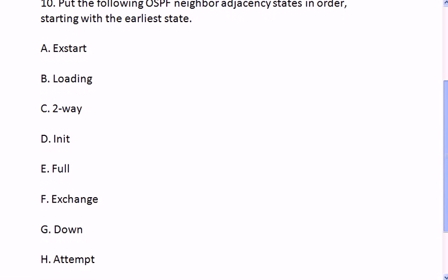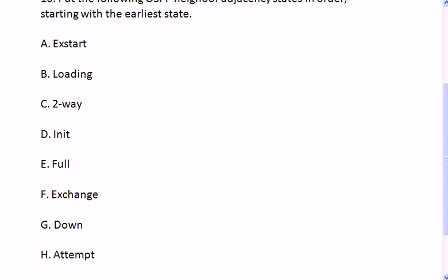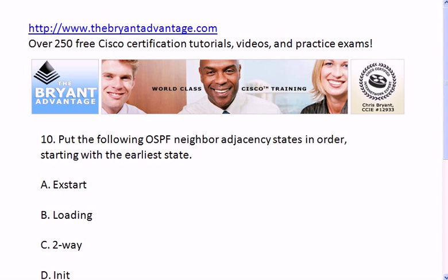Question ten — the OSPF neighbor adjacency states in order from earliest to latest: Down, Attempt, Init, Two-Way, Exstart, Exchange, Loading, and finally Full. A lot going on with OSPF — this is a good basic review for CCNA and CCNP candidates. I have plenty of other practice exams and tutorials on YouTube, and you can visit my tutorials page at thebryantadvantage.com/tutorials.htm — over 275 free Cisco tutorials available. Thanks for watching. I'm Chris Bryant, CCIE number 12933, and I'll see you at the website.